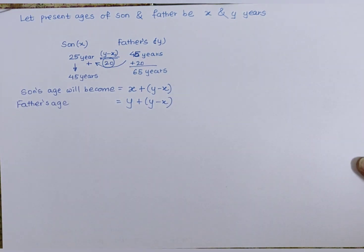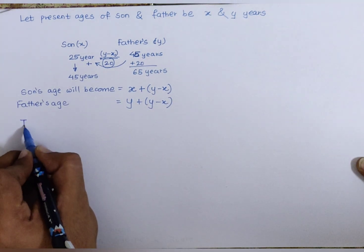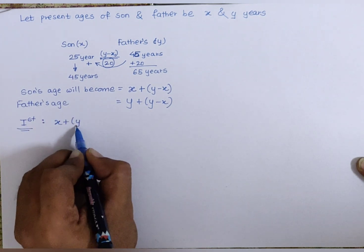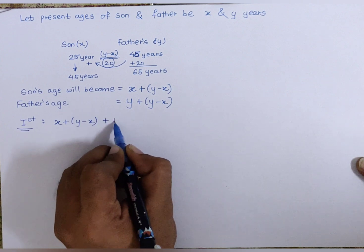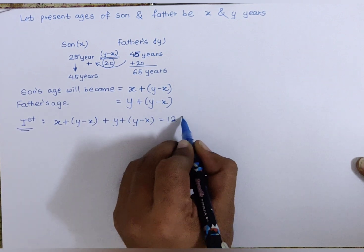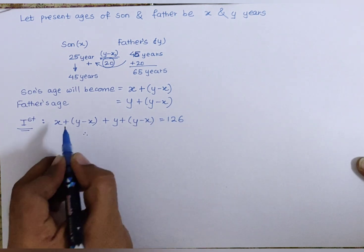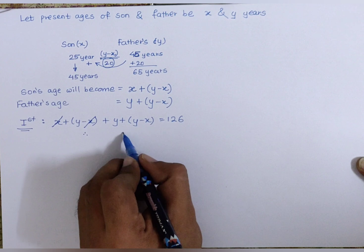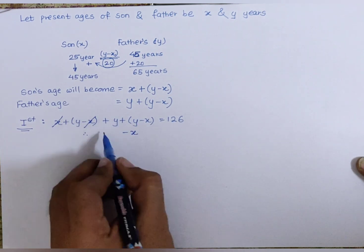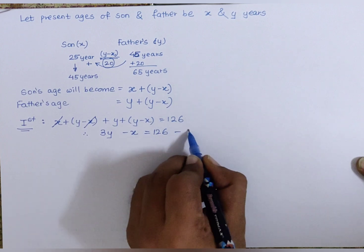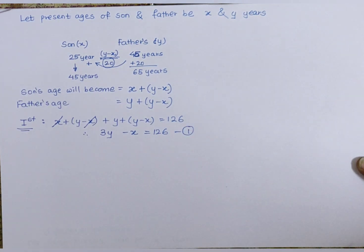Then according to the first condition, my first equation will become the sum of these ages as 126, which gives me x and x cancel, so I remain with only one x, and there are 3y, so 3y minus x equals 126 is my first equation.